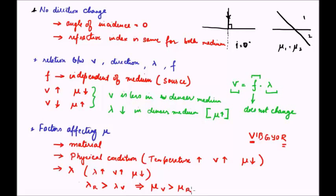To sum it up, the refractive index is a material property, a physical condition property dependent on temperature, and also a property of the wavelength of light being considered.